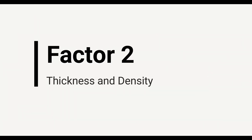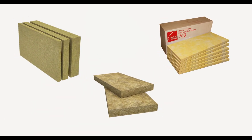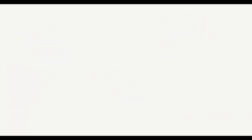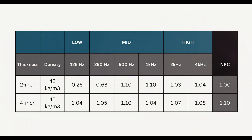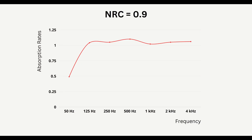Another factor to consider is thickness and density. Insulation materials come in various thicknesses and densities, which are relative to determining the absorption rates. A difference in the thickness or density of a material will result in a difference in absorption rates at the affected frequencies.